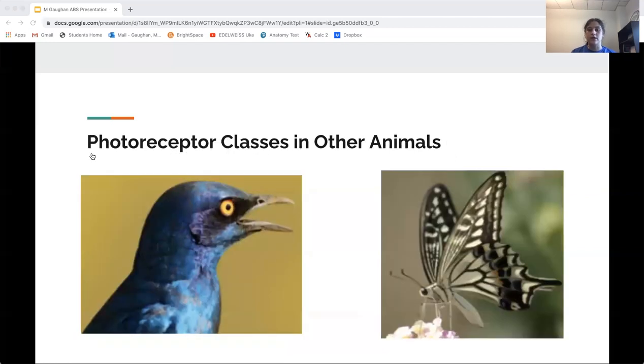In comparison, birds have four photoreceptor classes used for diurnal color vision and butterflies use five or more. Both of these animals have much more complex nervous systems and brains than those of fairy shrimp, which allows them to process the spectral information picked up by their photoreceptors better than fairy shrimp.